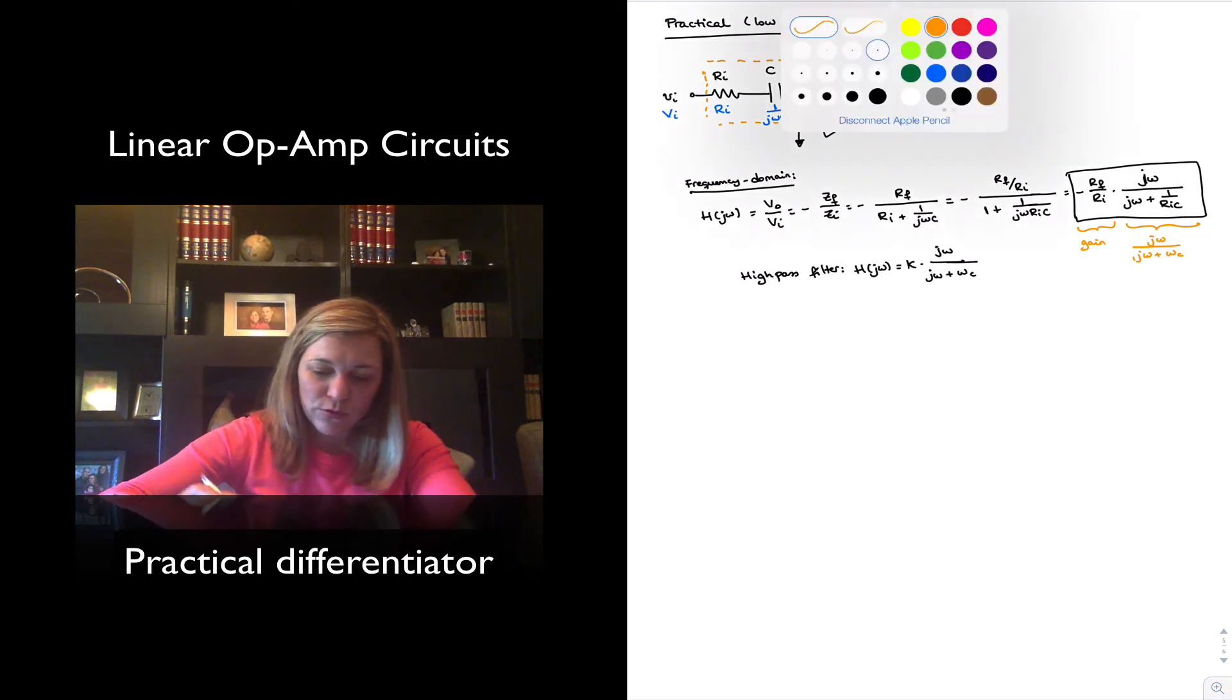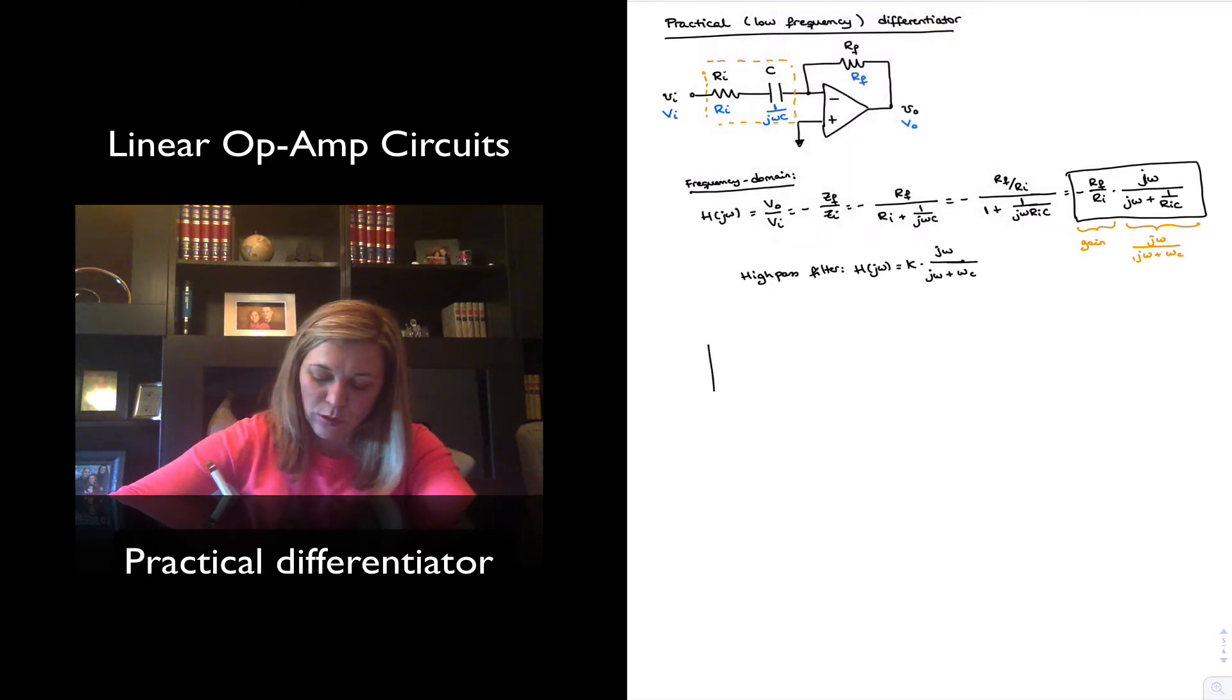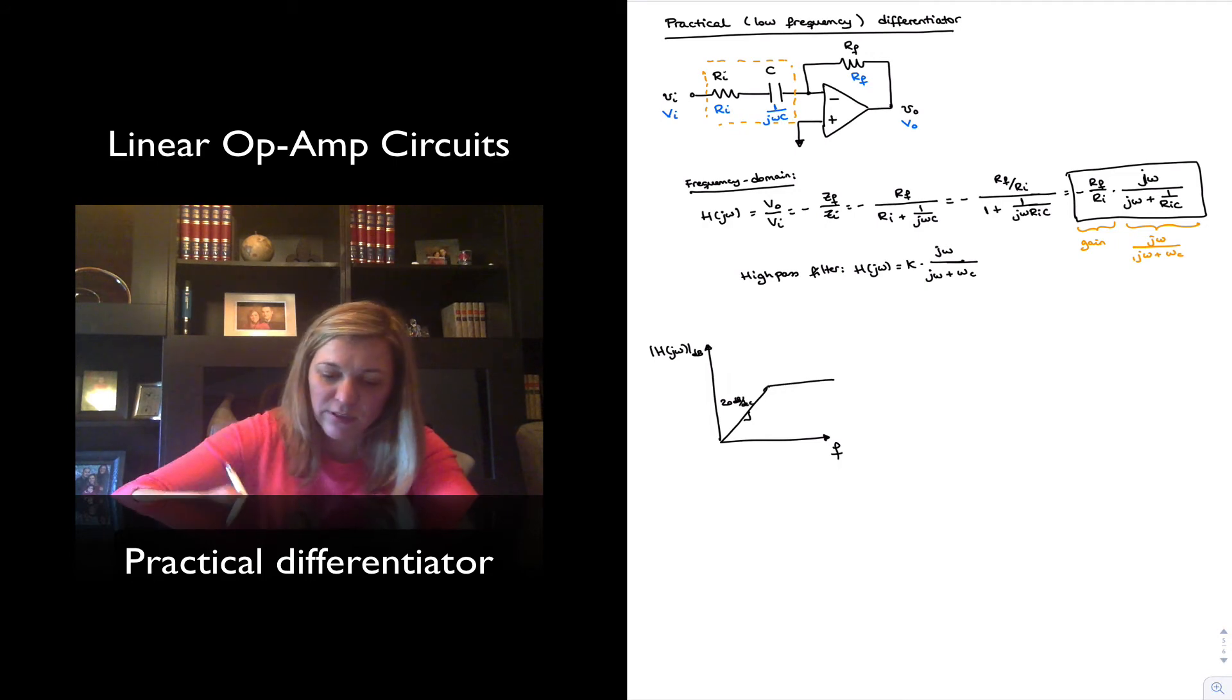If we wanted to draw or plot the magnitude response of the circuit, meaning magnitude of j omega in dBs versus frequency, we will see that it resembles that of a high-pass filter. It goes increasing at a rate of 20 dBs per decade until it reaches f sub c, and then it flattens out.